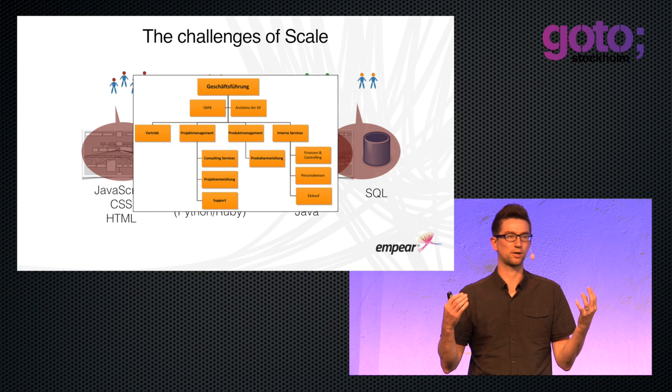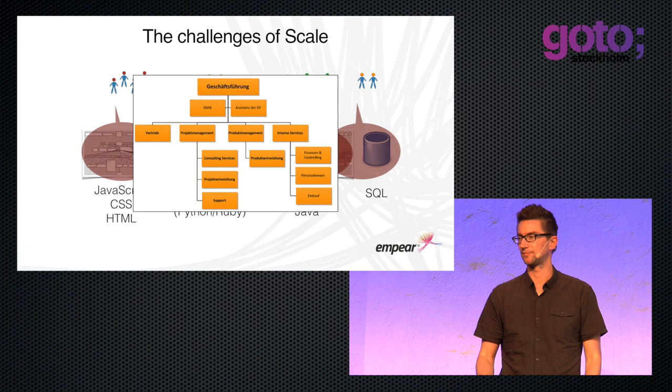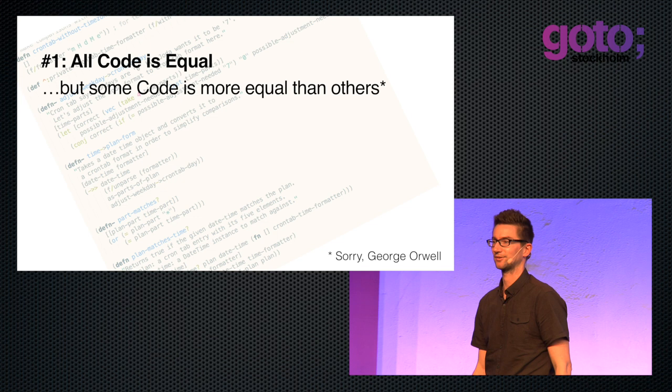Systems that look like this tend to come with an organization that looks like that. Our main challenge is to balance these technical and social organizational complexities, and that's actually a hard problem. But we can simplify it somewhat by understanding that all code is equal — but some code is more equal than others.